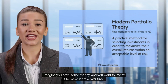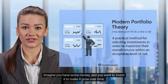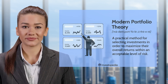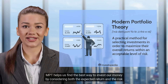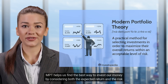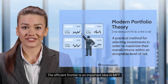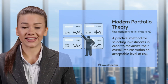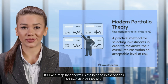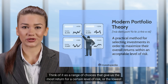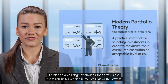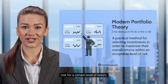Imagine you have some money and you want to invest it to make it grow over time. MPT helps us find the best way to invest our money by considering both the expected return and the risk involved. The efficient frontier is an important idea in MPT. It's like a map that shows us the best possible options for investing our money — a range of choices that give us the most return for a certain level of risk, or the lowest risk for a certain level of return.